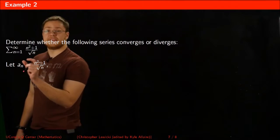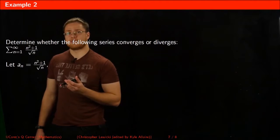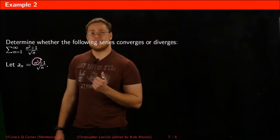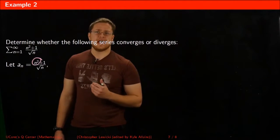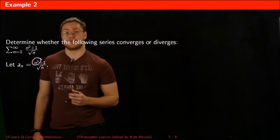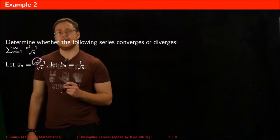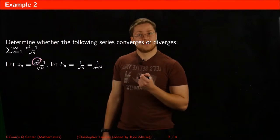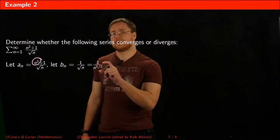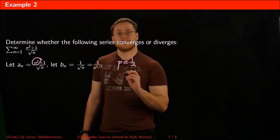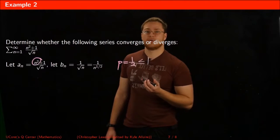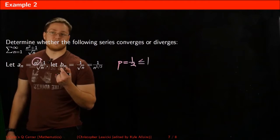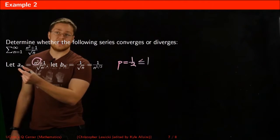Let's look at another example. I set the given sequence equal to An. As I think about how to construct Bn, I notice there is N squared in the numerator. N squared is always positive, meaning it only increases the numerator, and increasing the numerator increases the fraction as a whole. So I'll get rid of N squared, making Bn equal to 1 divided by the square root of N, which is N^(1/2). This is a P-series with P = 1/2, which is less than or equal to 1, so the series of Bn diverges. If I can show Bn ≤ An, then I can prove An also diverges.